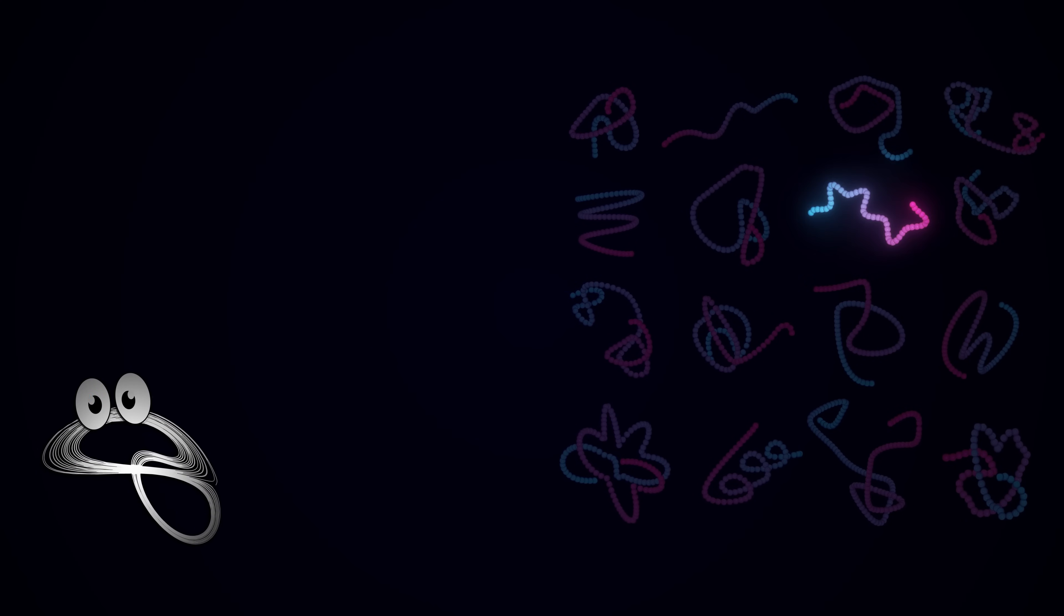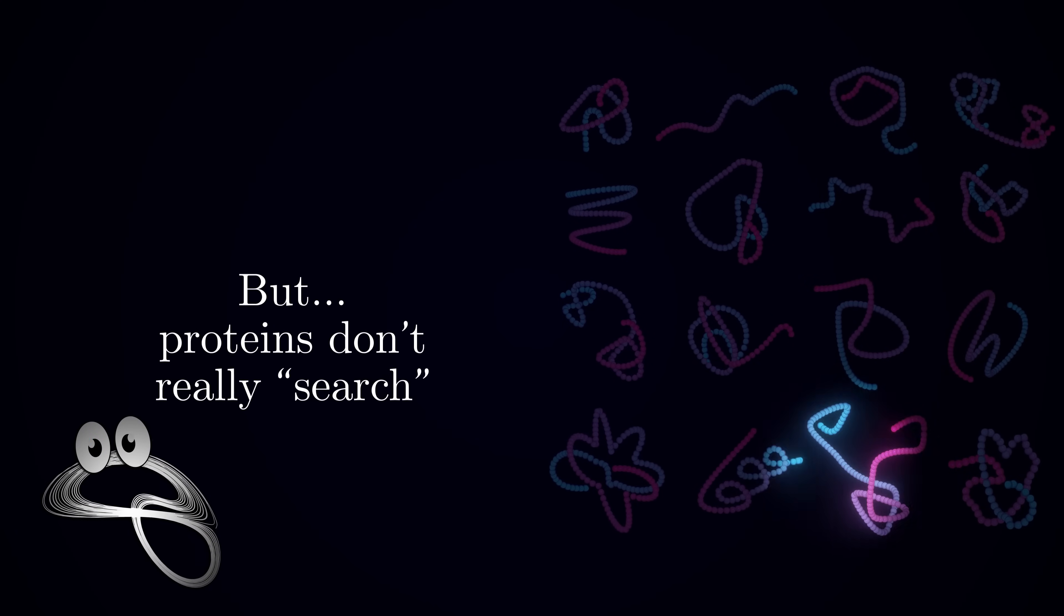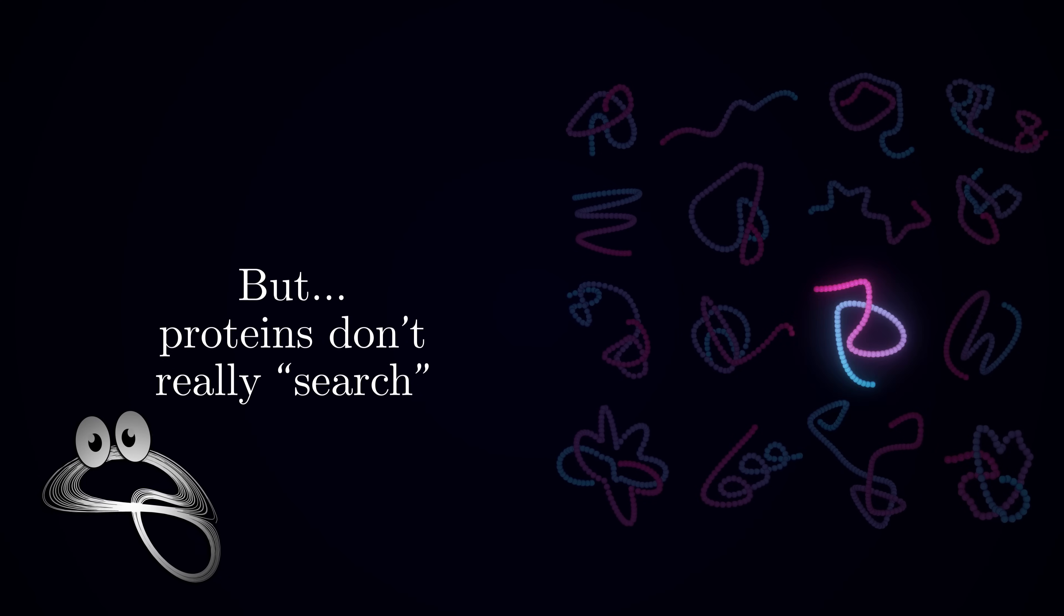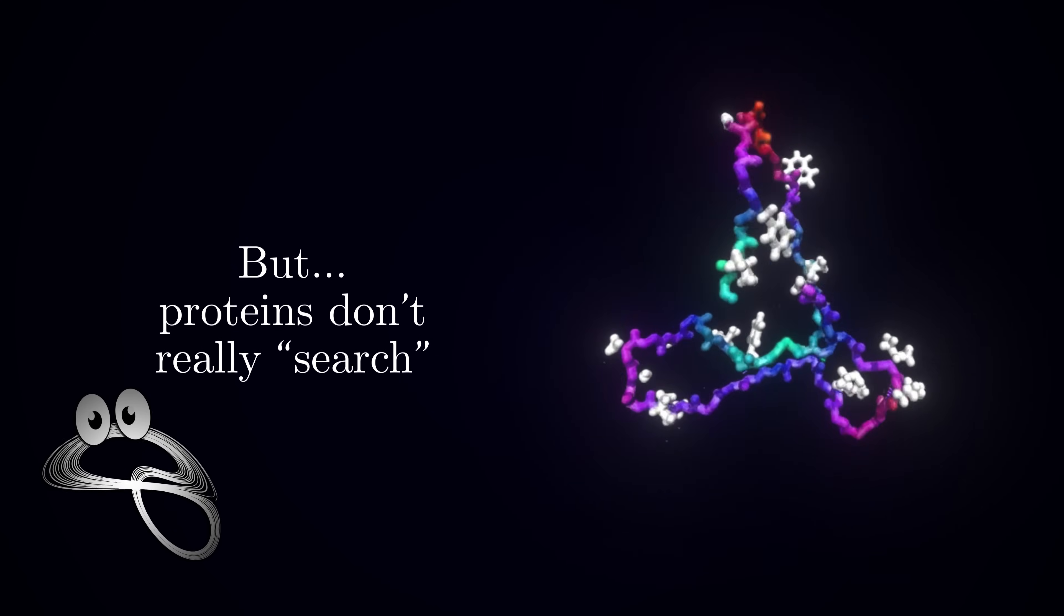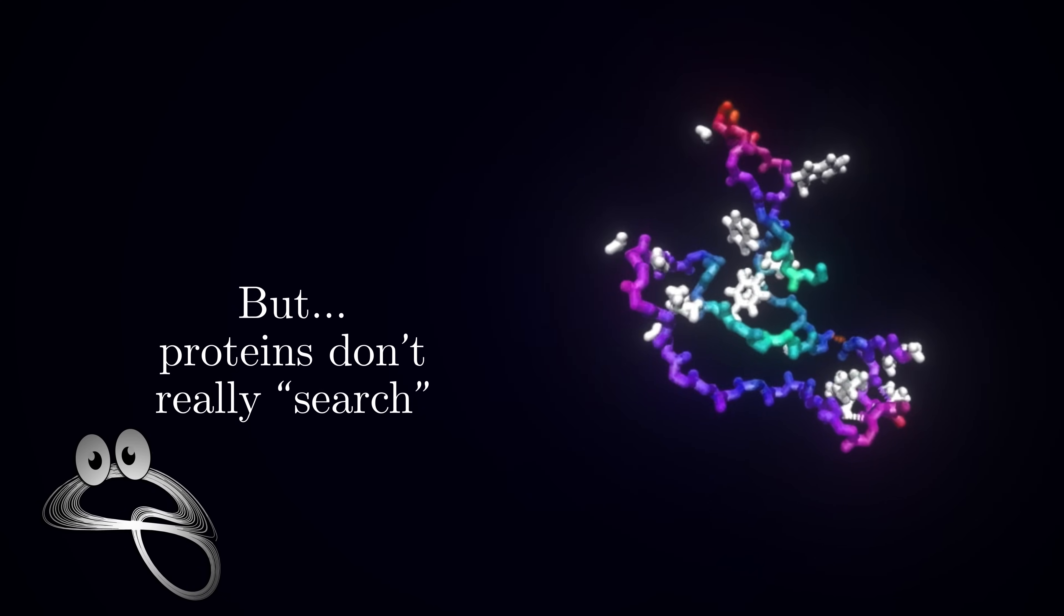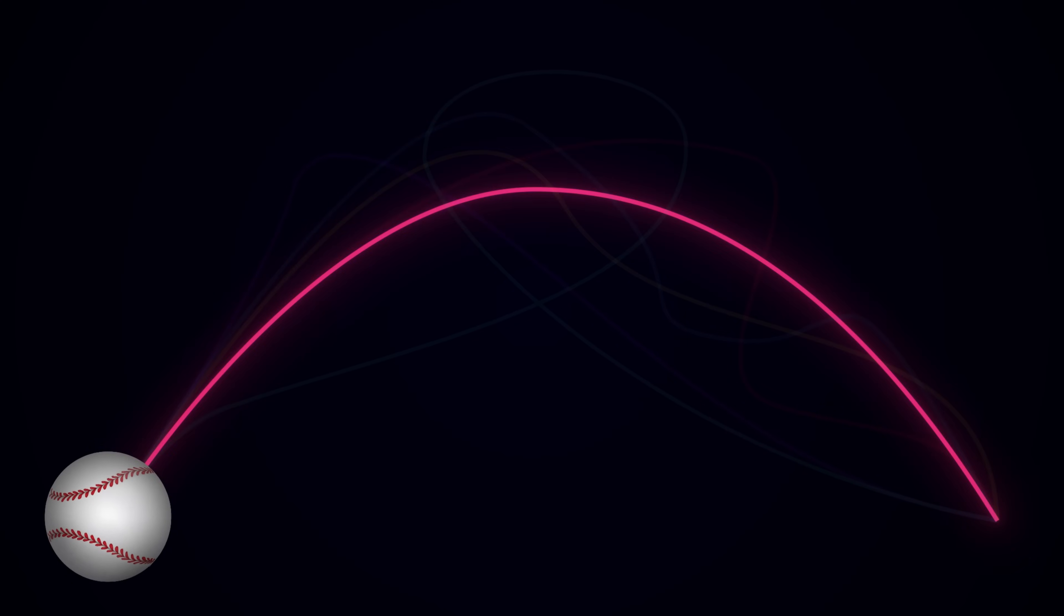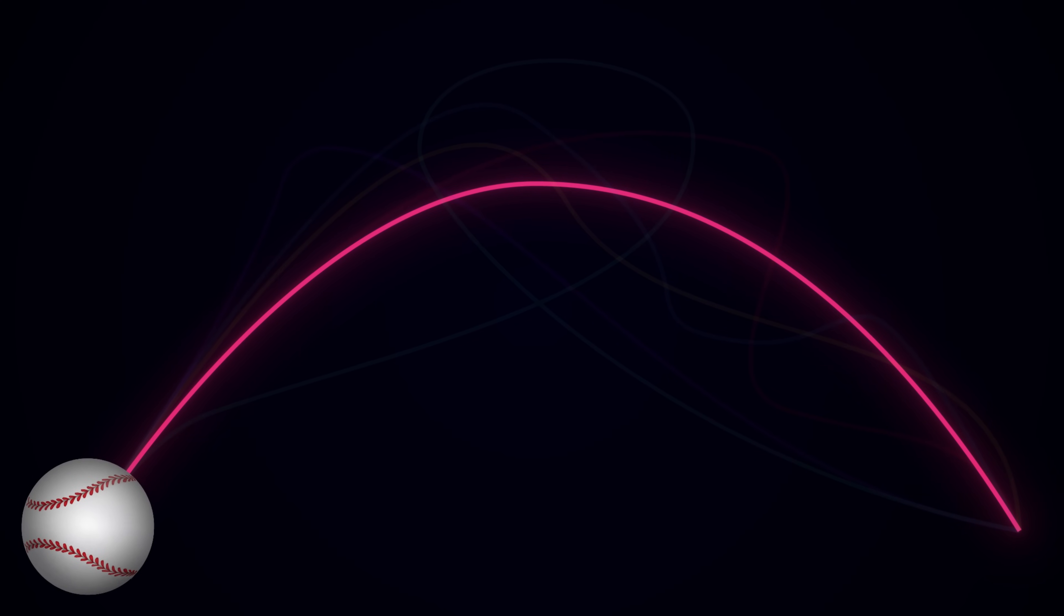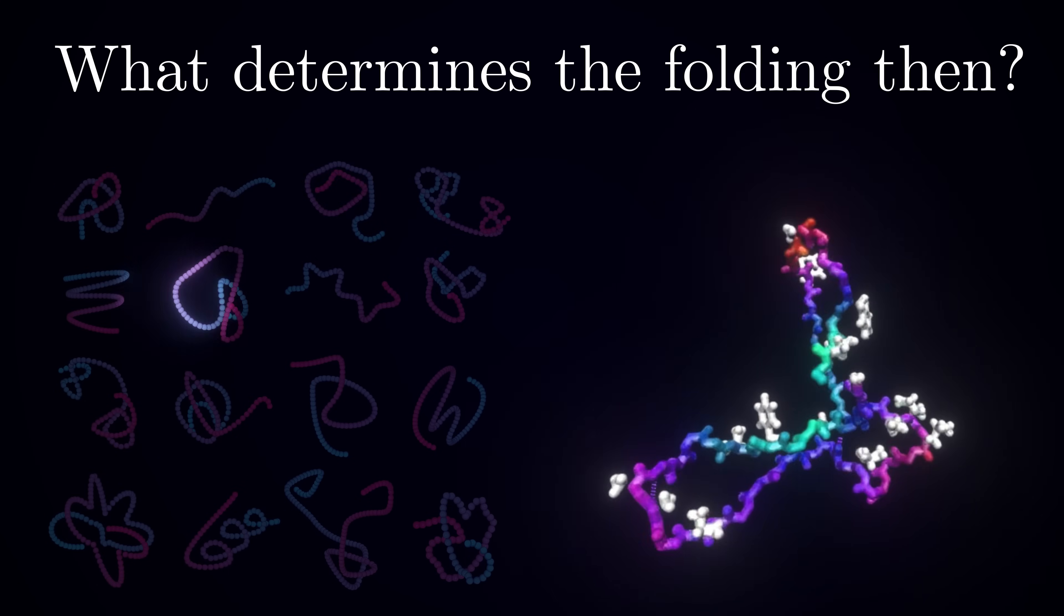When I first heard this paradox in high school, it seemed to me like an ill-posed question. After all, the protein molecule is not a computer, so it doesn't do any sort of search. It just folds into the most stable and favorable configuration according to physical laws. This is similar to how when you throw a ball, the ball doesn't search through all possible trajectories to select the optimal parabolic one. It simply follows that path because, well, physics works this way.